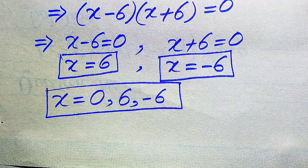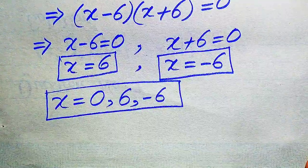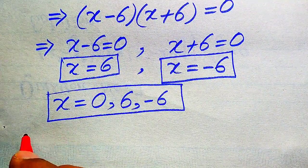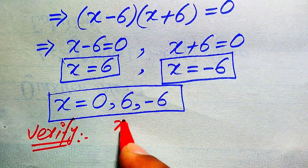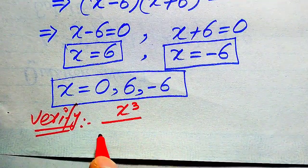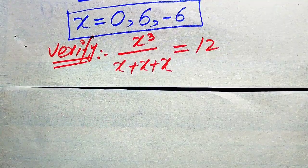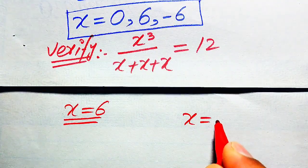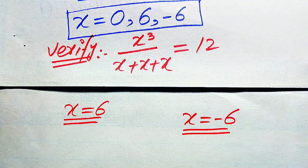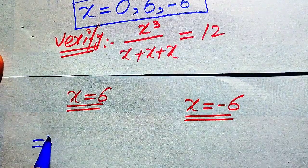Now we verify whether these roots are actual solutions or extraneous roots. We copy down the original equation: x cubed divided by x, plus x plus x, equals 12. We will substitute x equals 6 and x equals minus 6 into the left-hand side to check.